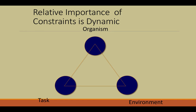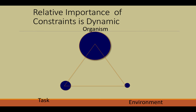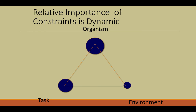With these three constraints, we must keep in mind that the interaction between them is dynamic. At different points in our lives, each constraint plays a bigger role in shaping our motor behavior. For example, when we're very young, the organismic constraint plays a large role because we don't have the strength or structure to perform complicated motor tasks. For different skills, the task constraint oftentimes tends to play a very large role.